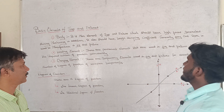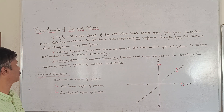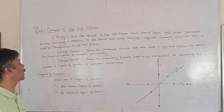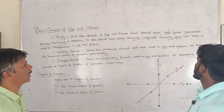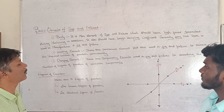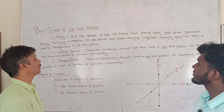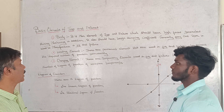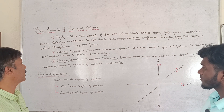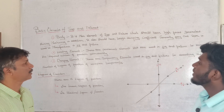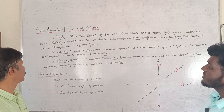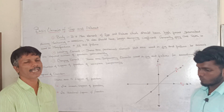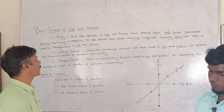Locating elements are permanent elements used in Jigs and Fixtures to arrest the required number of degrees of freedom permanently. Clamping elements are temporary elements used in Jigs and Fixtures to arrest the degrees of freedom of a workpiece temporarily.